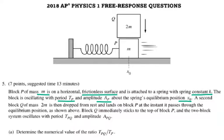A second block Q of mass 2M is then dropped from rest and lands on the block P at the instant it passes through the equilibrium position, as shown above. Block Q immediately sticks to the top of the block P and the two-block system oscillates with the period TPQ and the amplitude APQ. Determine the numerical value of the ratio TPQ over TP.